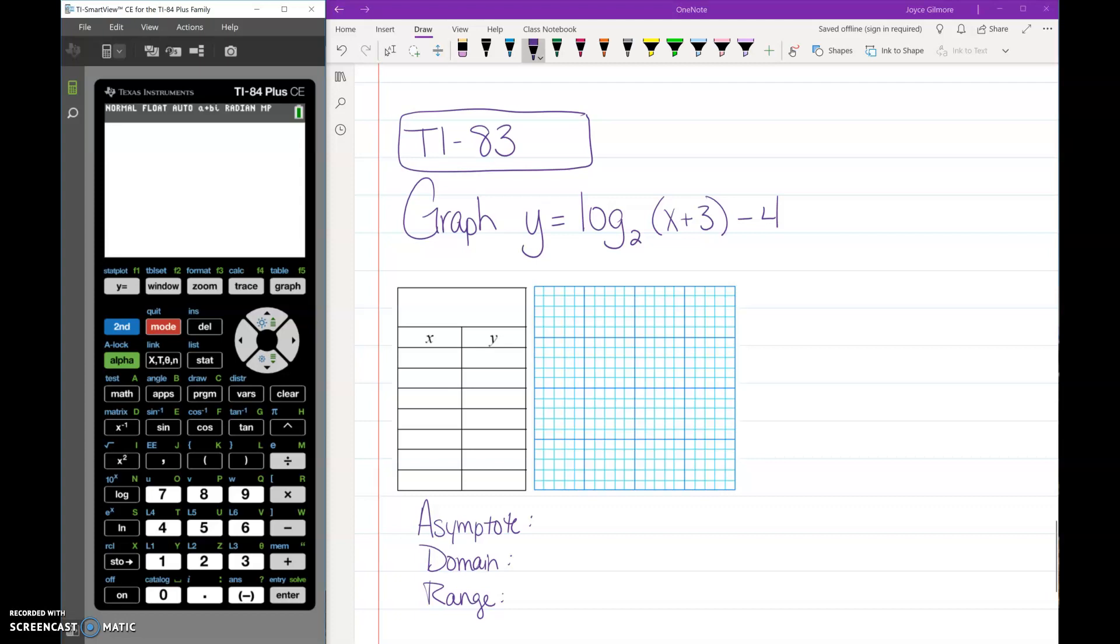Well, if your calculator can do log base, try pressing alpha window. If something pops up like this and you see log base, your calculator has the log base feature. If you do that key press on a TI-83, nothing happens. Nothing pops up.